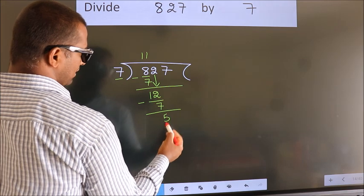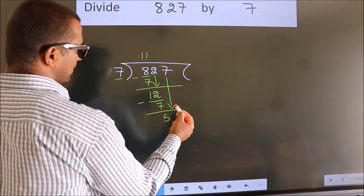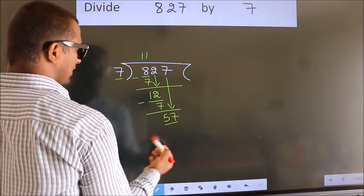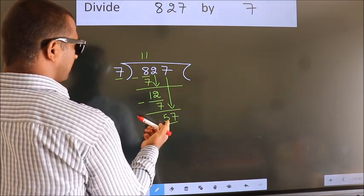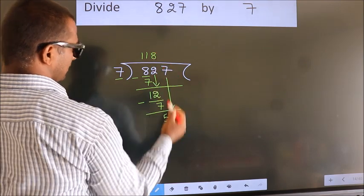We get 5. After this, bring down the beside number. So 7 down, so 57. A number close to 57 in the 7 table is 7 times 8, 56.